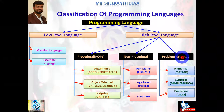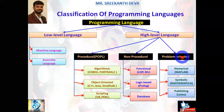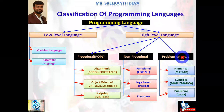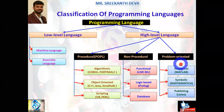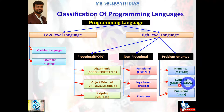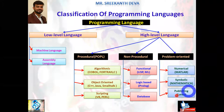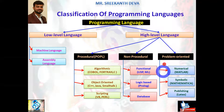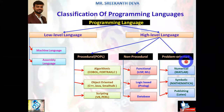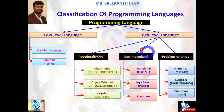Problem-oriented languages were designed to solve specific problems. Query languages and application generators come under problem-oriented languages. Examples include numerical languages like MATLAB, symbolic mathematical languages, and publishing languages like LaTeX.